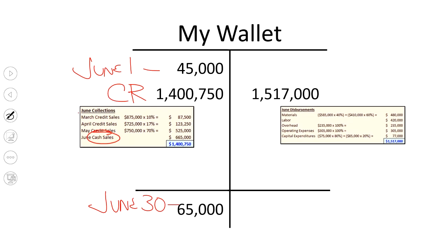The trickier part, here's all my credit sales. So I've got 70% of May and 17% of April and 10% of March. So I'm going to take each month's sales times that percentage to figure out how much of that's being collected in June. Add it up and I come up with this number, $1,400,750.